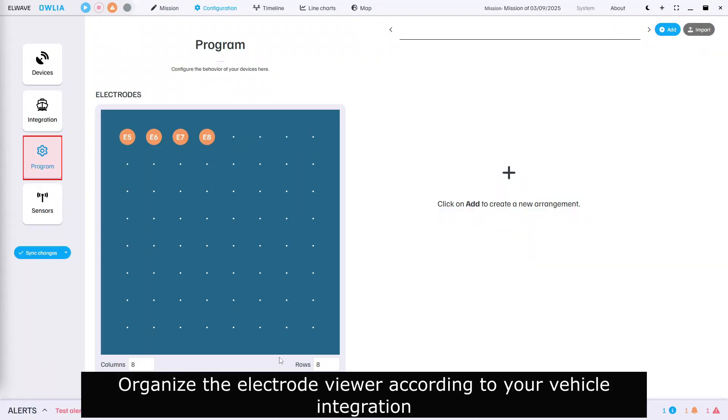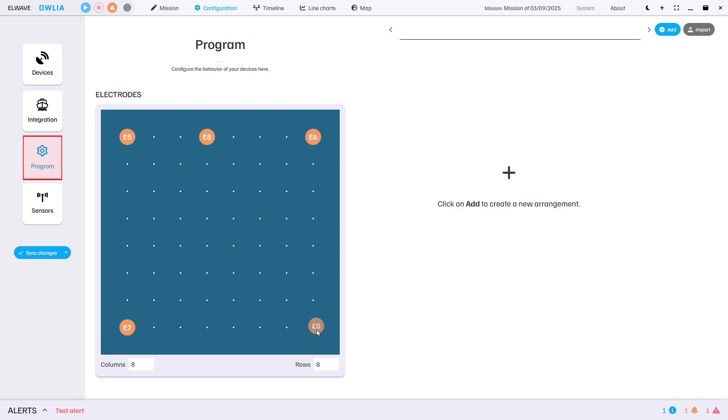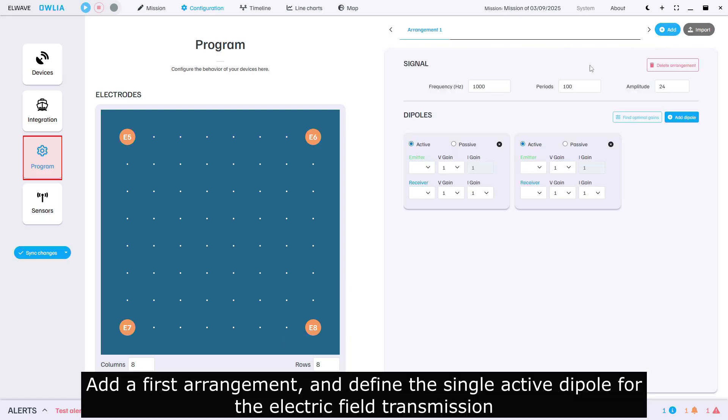Organize the electrode viewer according to your vehicle integration. Add a first arrangement and define the single active dipole for the electric field transmission.